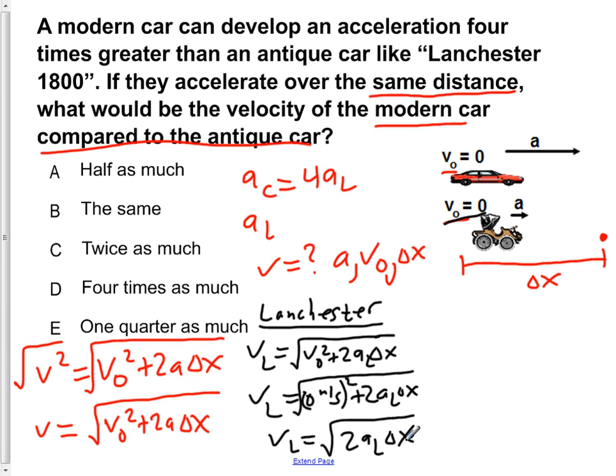We're not told what aL or delta x is, so we can't actually solve for a specific quantity for vL. But all we have to do is find what the velocity of the car is in terms of vL, and we will have our comparison. So now let's solve for what the velocity of the car would be.